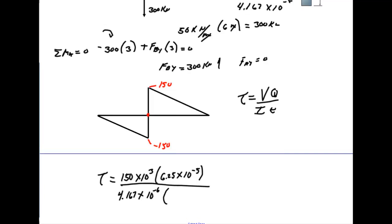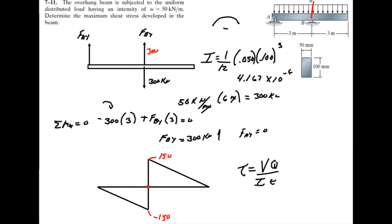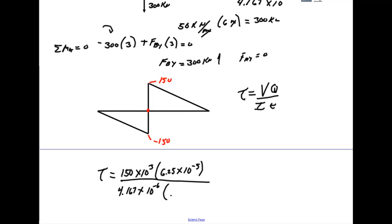Now we just multiply by the thickness of the part. Thickness across the middle where maximum shear occurs is 0.05. All we have to do is run that number, and we'll get 44.996 times 10 to the positive 6, which is equivalent to 45 megapascals. And that's it.